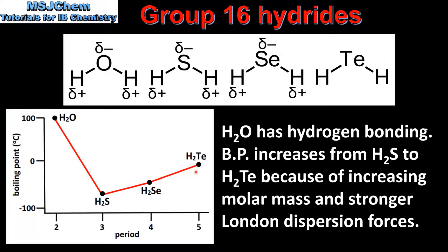Of the three remaining group 16 hydrides, H2Te has the highest boiling point. Despite being the least polar molecule, it has a higher boiling point than the other two. The reason for this is its high molar mass, which results in stronger London dispersion forces between its molecules. If you found this video useful, check out my other videos at www.msjchem.com.